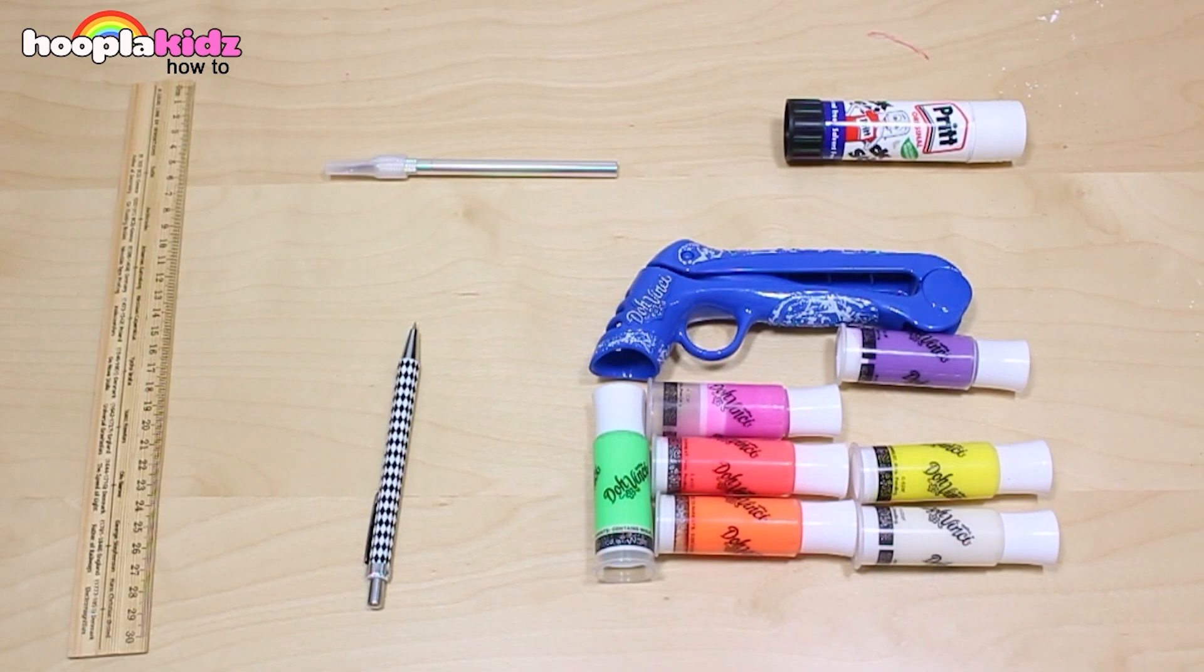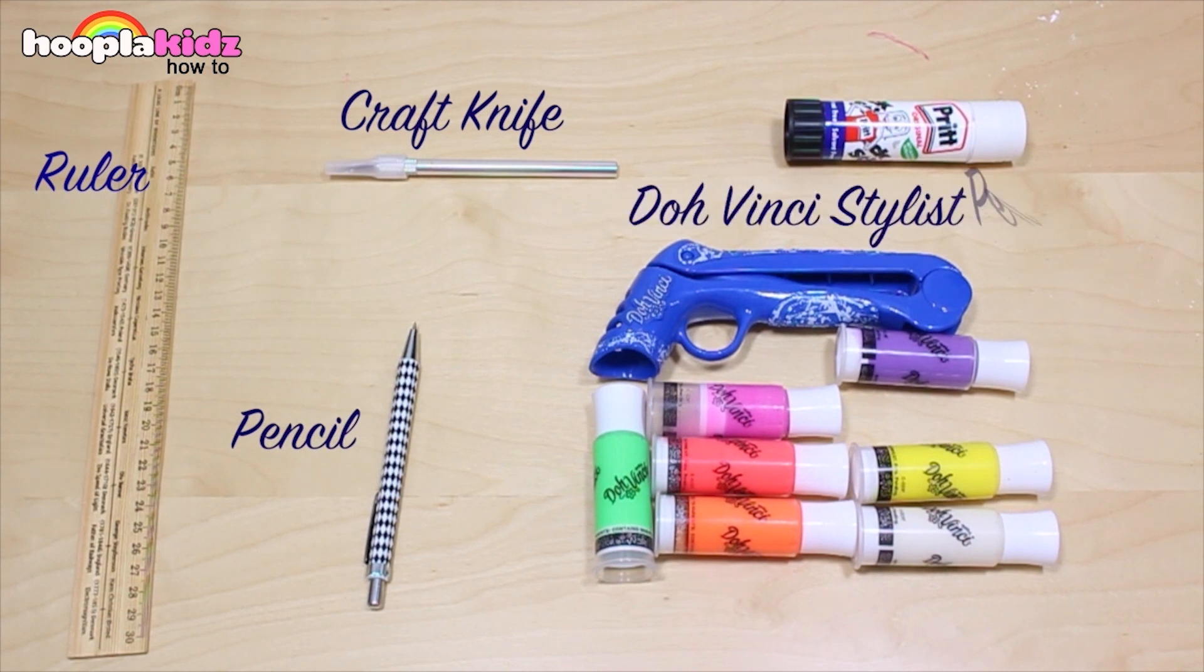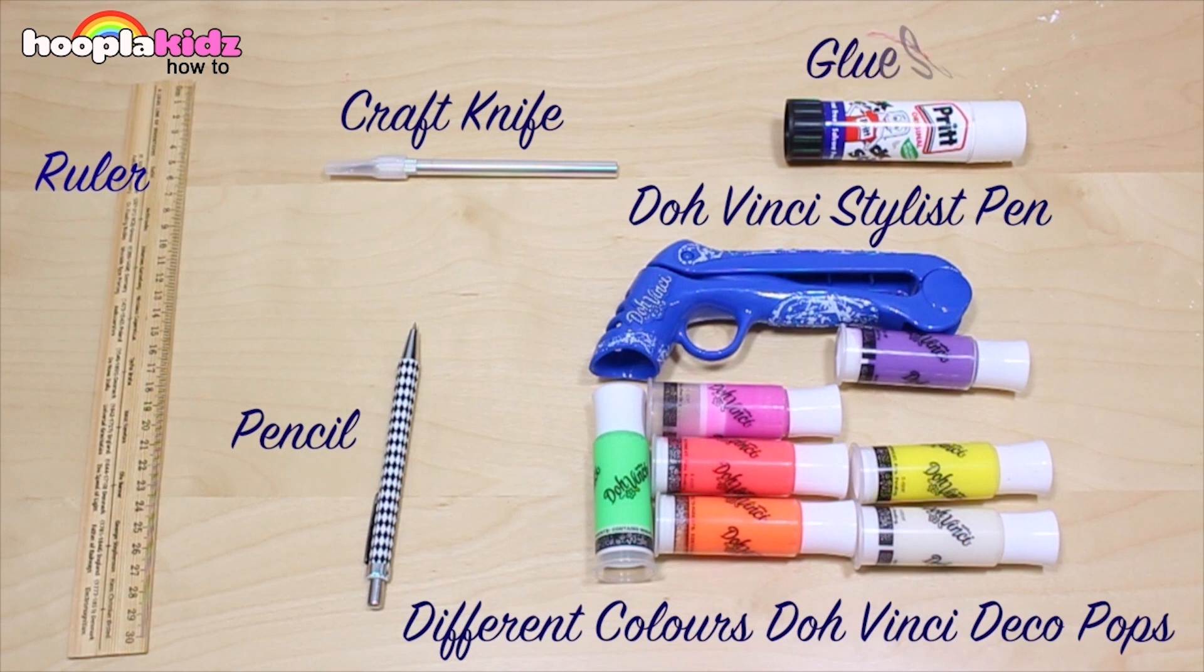You're also going to need a ruler, a craft knife, a pencil, a DoVinci stylus pen, different colors of DoVinci deco pops, and a glue stick.